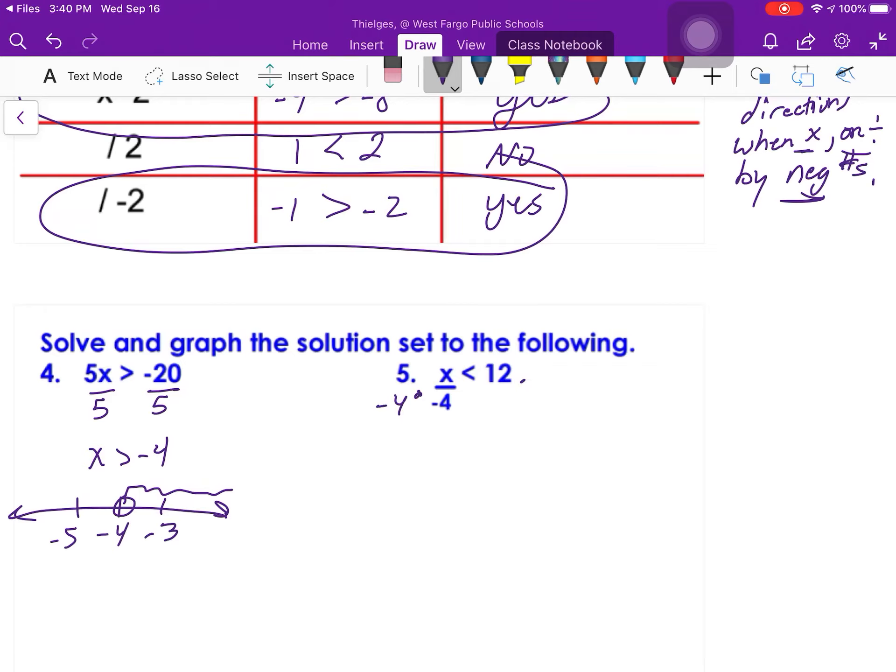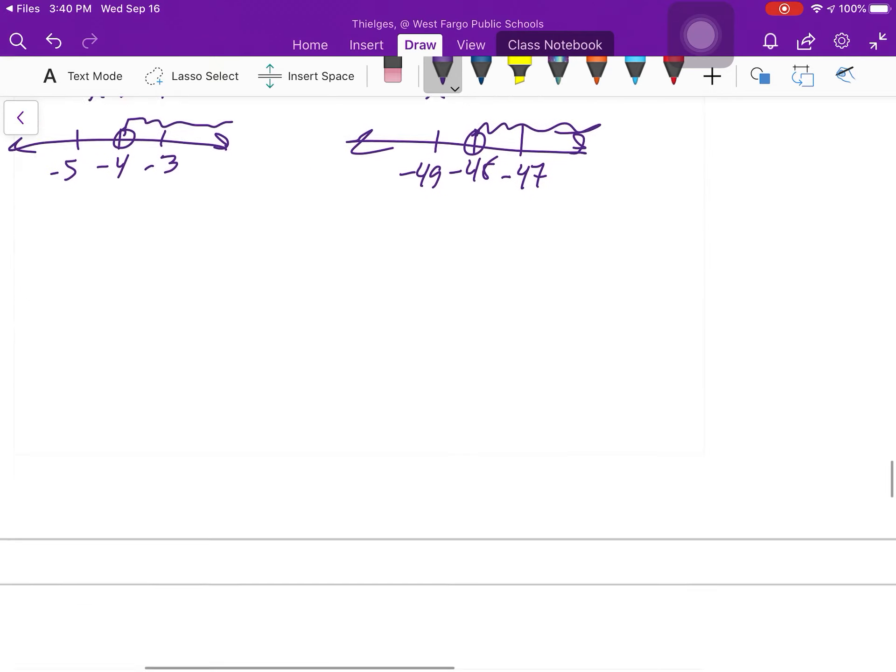Multiplying by a negative 4. Hey, now I multiply by a negative number. Now I change that direction of that sign to go this way. And negative 48. So, negative 48, negative 47, negative 49. And now open circle, and bigger than. So, I'm going to shade to the right. Okay? So, I only changed it on problem number 5 there, because it was multiplying by a negative number.